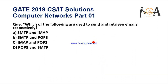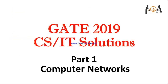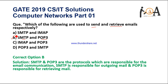The very first question under this section asks: which of the following are used to send and receive emails respectively? Basically, SMTP (Simple Mail Transfer Protocol) is responsible for sending or outgoing mails, and POP3 is responsible for retrieving the mail. So Option B is the correct answer.